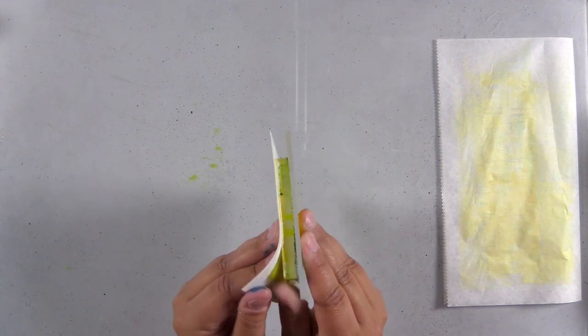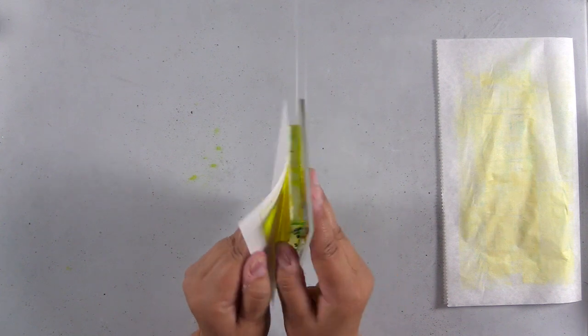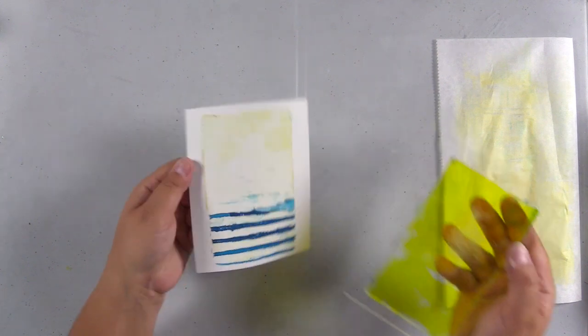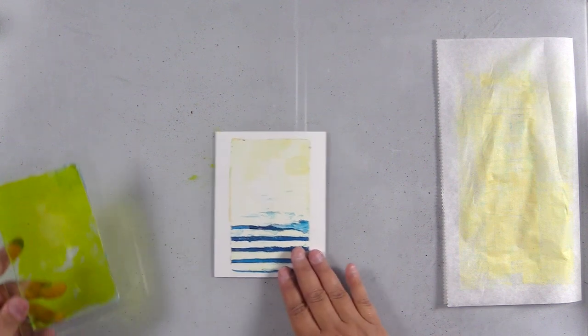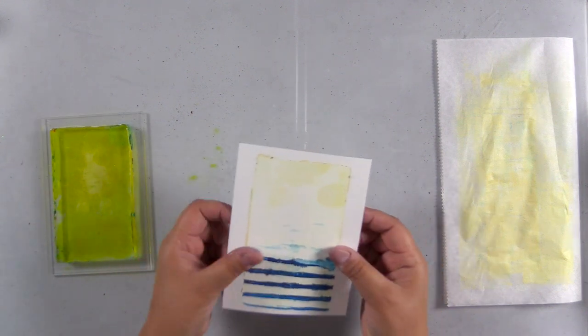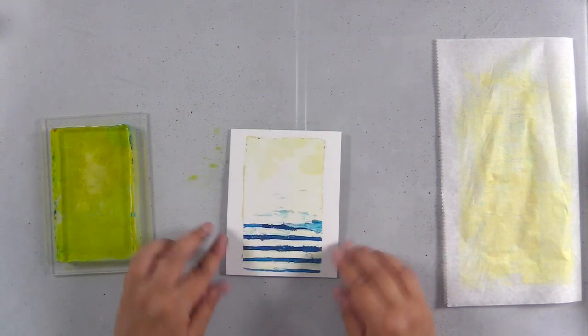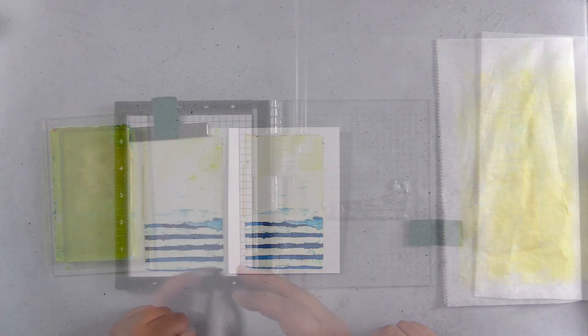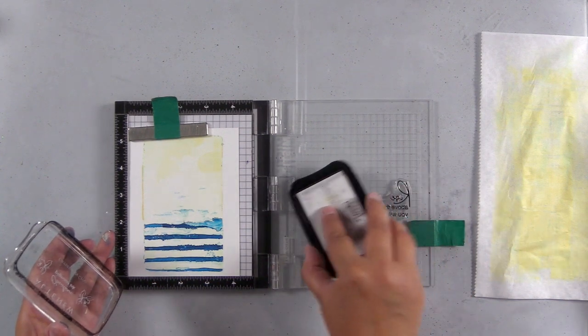If you're looking for more of a distressed look, then you can go ahead and pull it before your paint has really adhered. So you can see I have a little bit of the yellow up top. I like that I have a border all the way around, even though for the most part, there's a lot of white space in the middle. And that's going to work out perfectly for the sentiment.